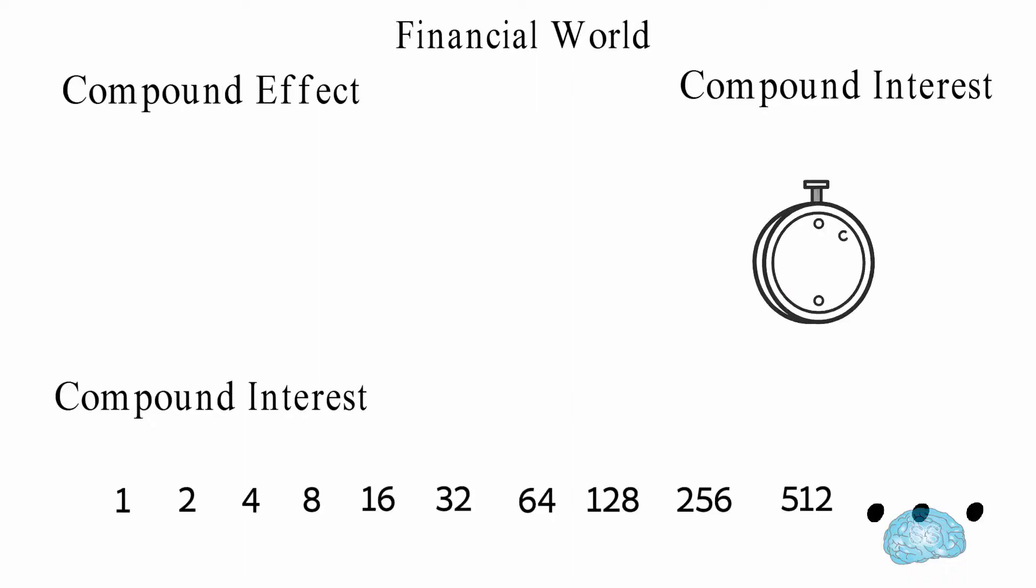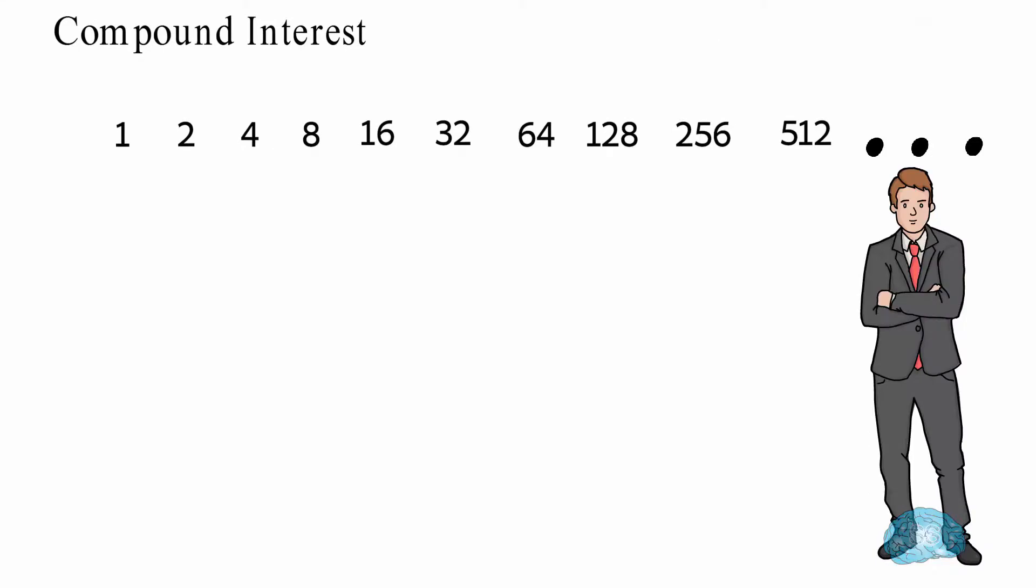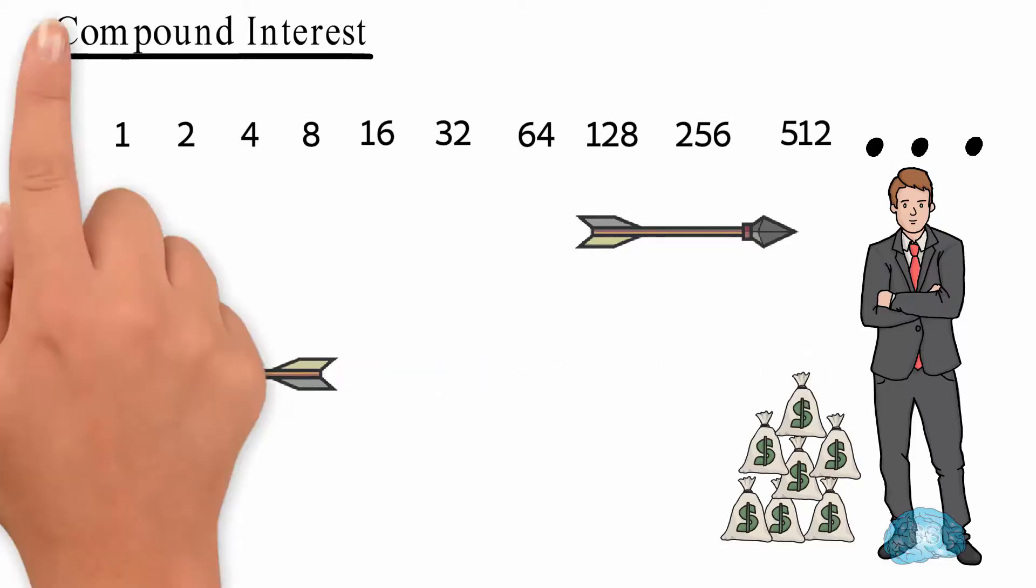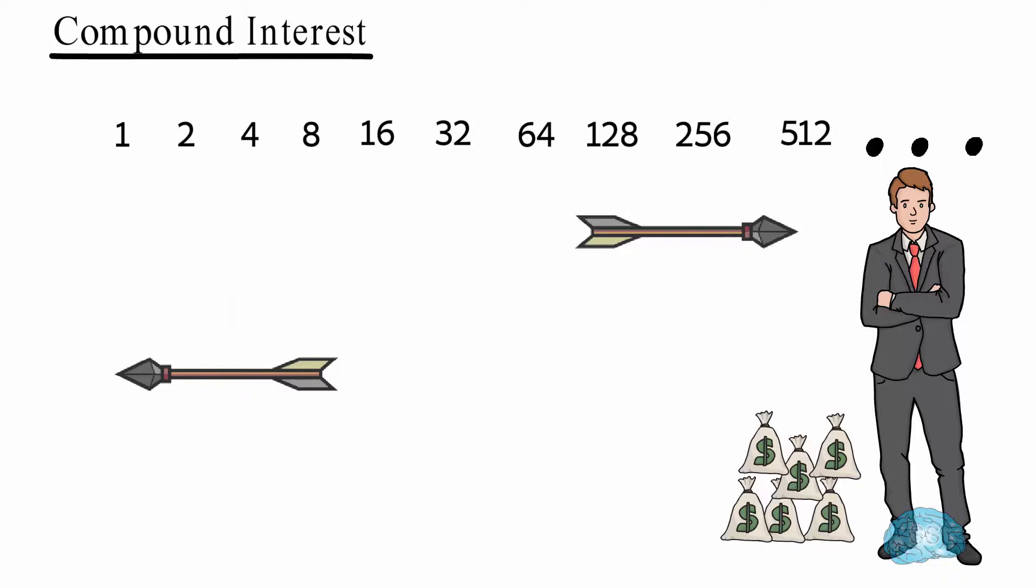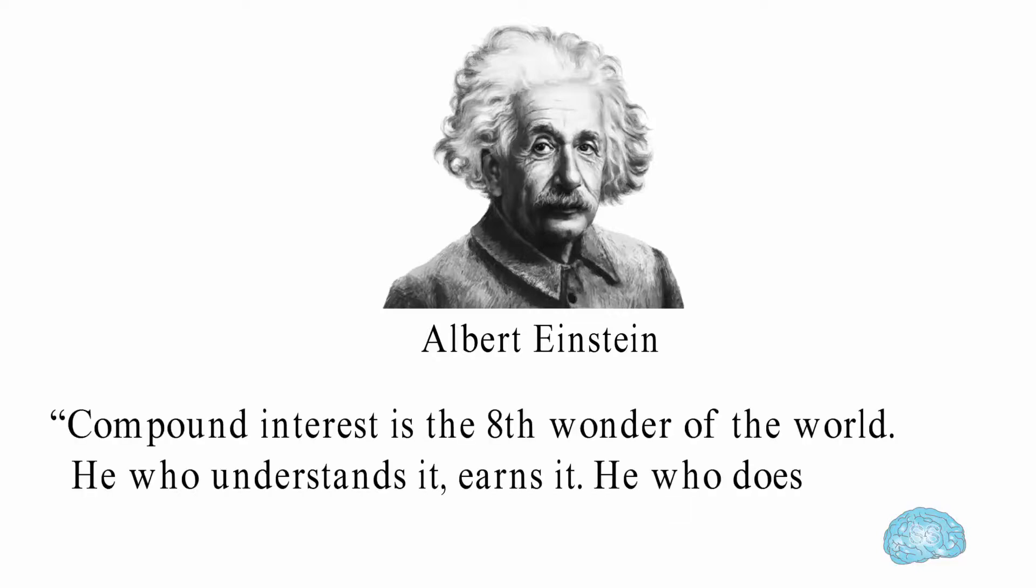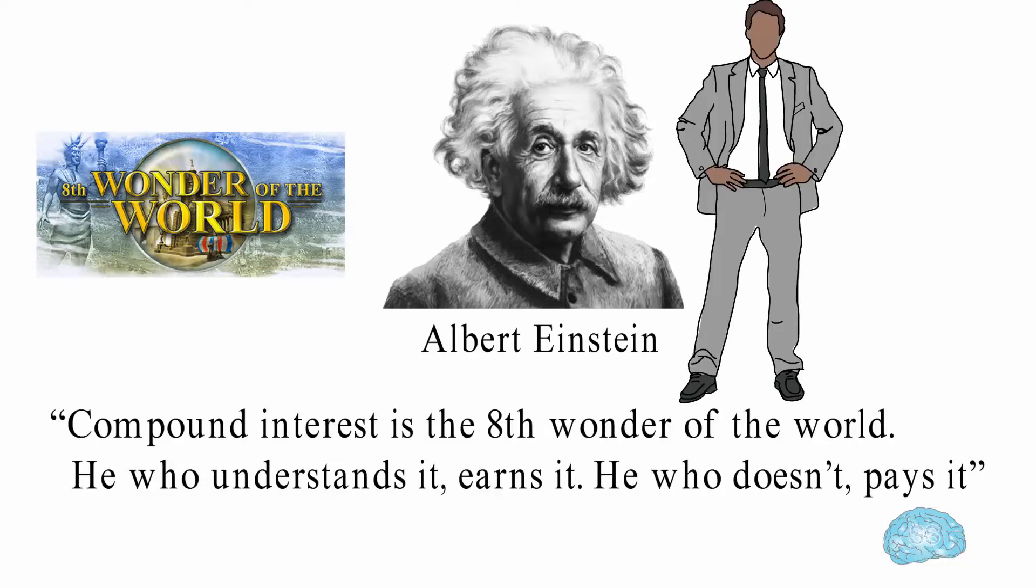Similar to compound effect, in the financial world there is something called compound interest. Compound interest keeps on doubling, and over a period of time, the interest amount becomes very high. If you are receiving money using compound interest, then you are gaining wealth. But if you are paying money through compound interest, then you will lose all your wealth. That's why Albert Einstein has said: Compound interest is the eighth wonder of the world. He who understands it earns it. He who doesn't pays it.